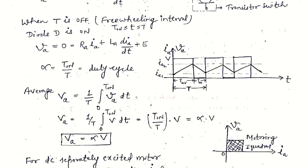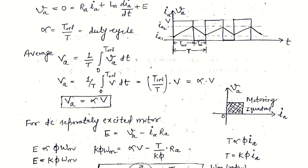To find the average output voltage (input to armature terminal), we write: V_A = (1/T) ∫₀^T_on V dt. Since V_A = V during 0 to T_on and zero from T_on to T, integrating gives average V_A = (T_on / T) · V = α·V. This is the same as the step-down chopper expression. The output voltage is always less than the input voltage since α is always less than 1.